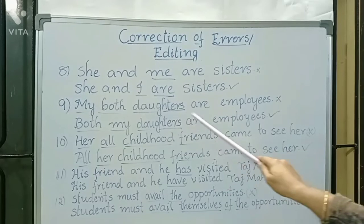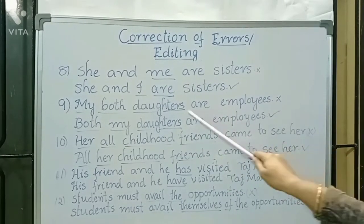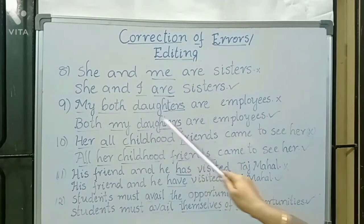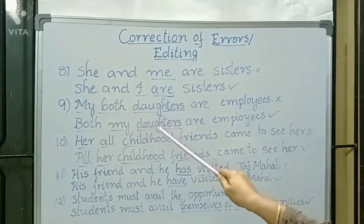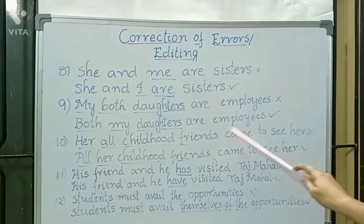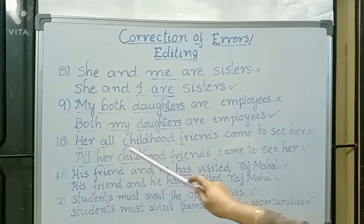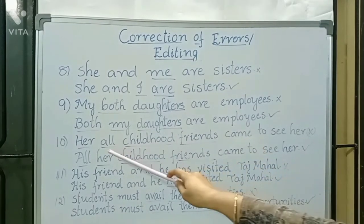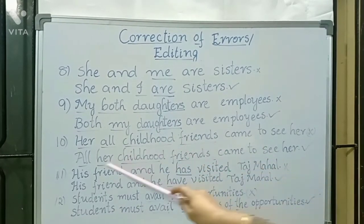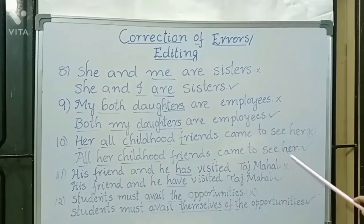My both daughters are employees — this is wrong. The correct form is: both my daughters are employees. Similarly, 'her all childhood friends' is wrong. The correct form is: all her childhood friends came to see her.